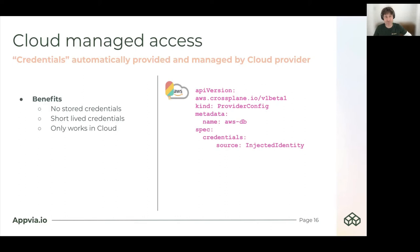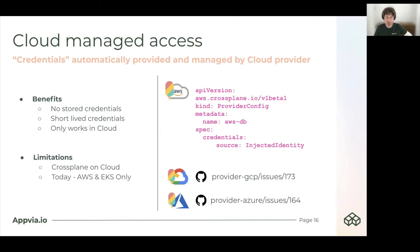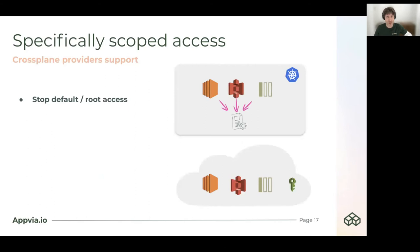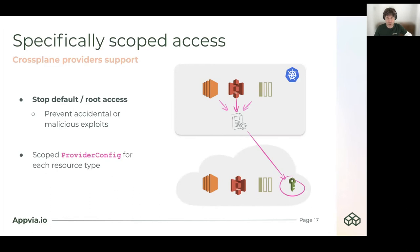The limitation is that you've got to install Crossplane on a cloud provider, and today that means only on Amazon with EKS, using this capability of injected identity. The community is already cognizant of this and have issues against the other providers to bring this capability up to date across Crossplane. We also want specifically scoped access — we want to stop default or root access where we have one provider config. The risk here is around preventing accidental or malicious exploits, including access to IAM provisioning, which means we can provision backdoors and inappropriate access to our cloud accounts. Using scoped provider configs for each resource type, we can mitigate and remove this particular issue.